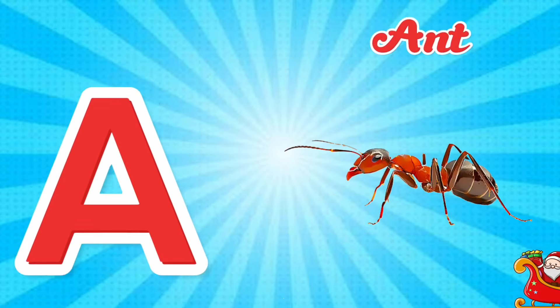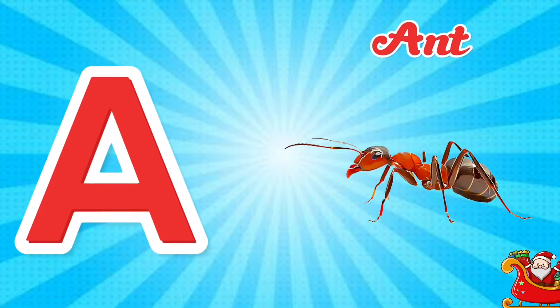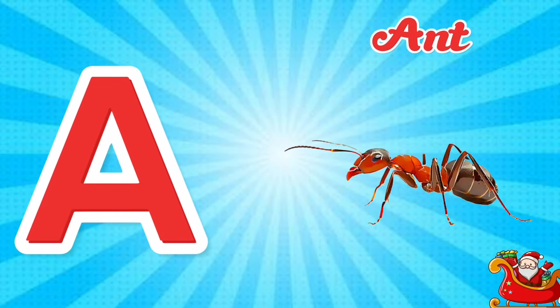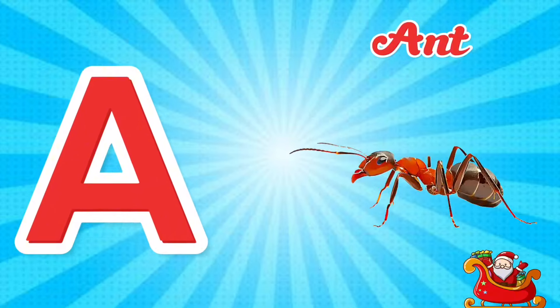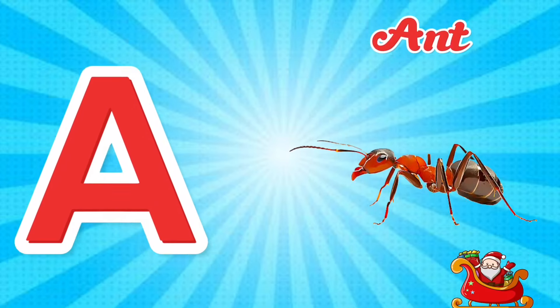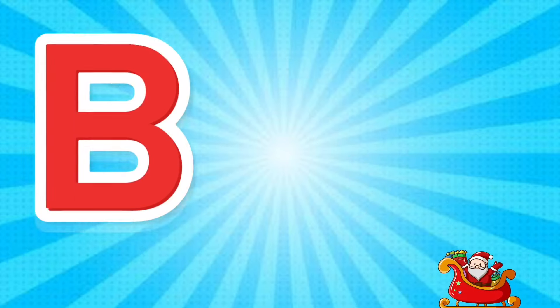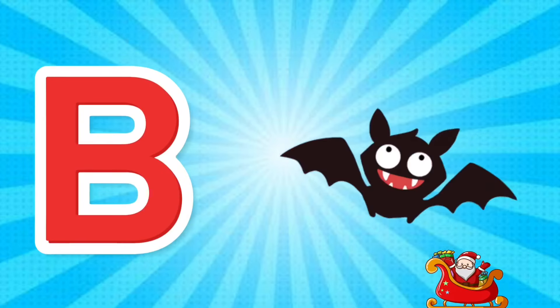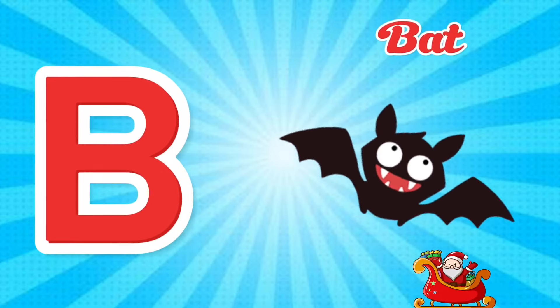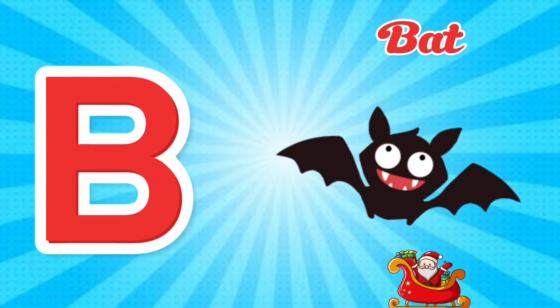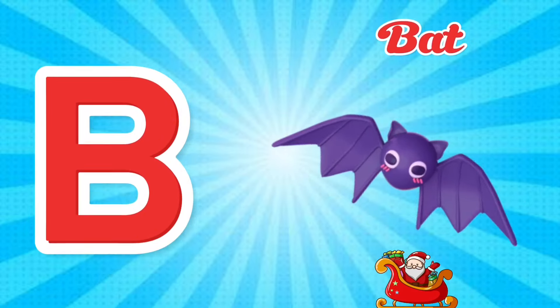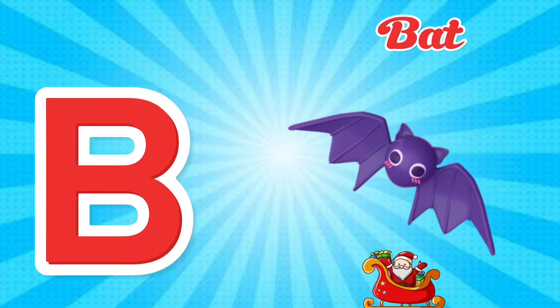A is for Ant. A, A. Ant, A is for Ant. A, A. B is for Bat. B, B. Bat, B is for Bat. B, B.